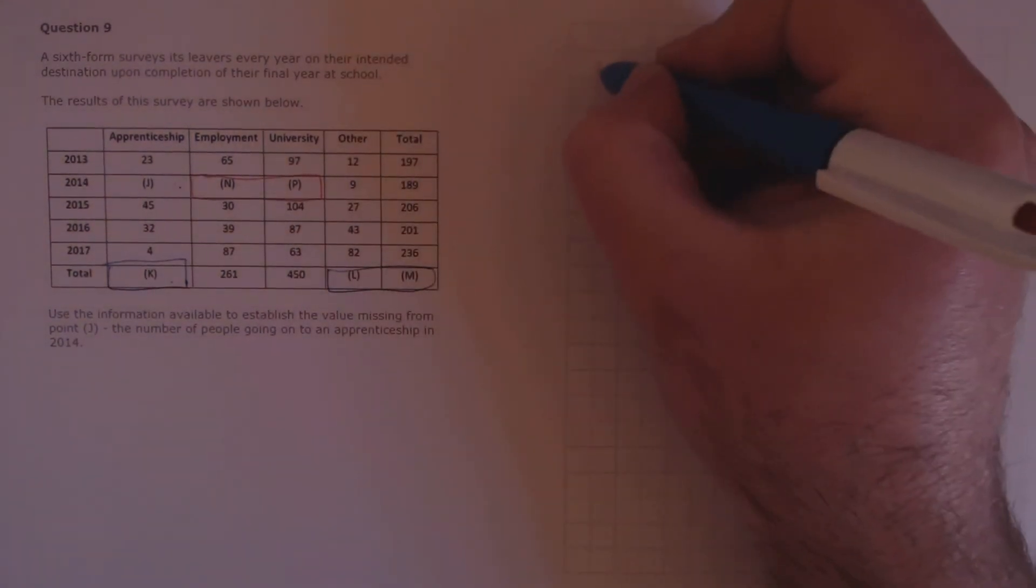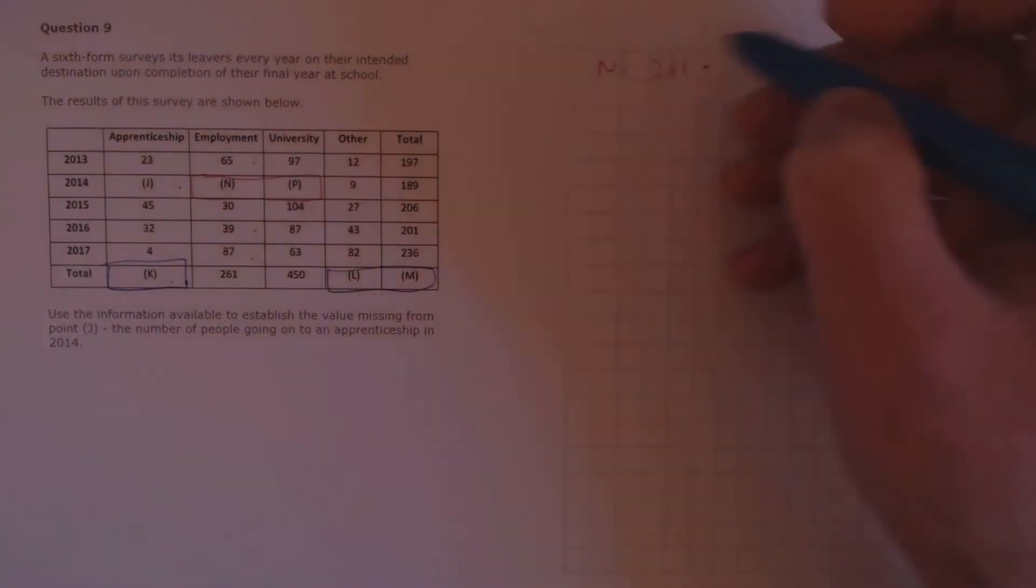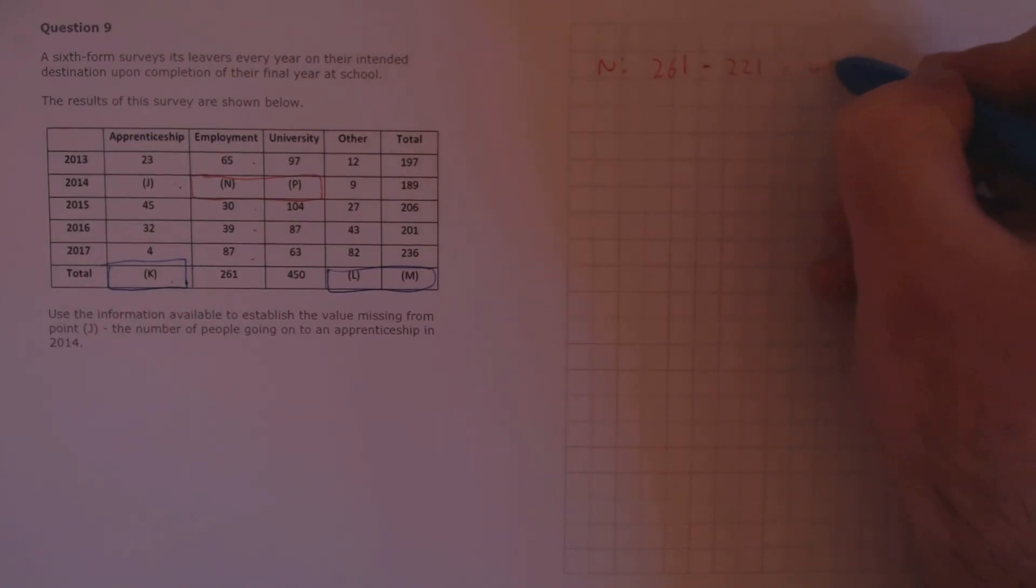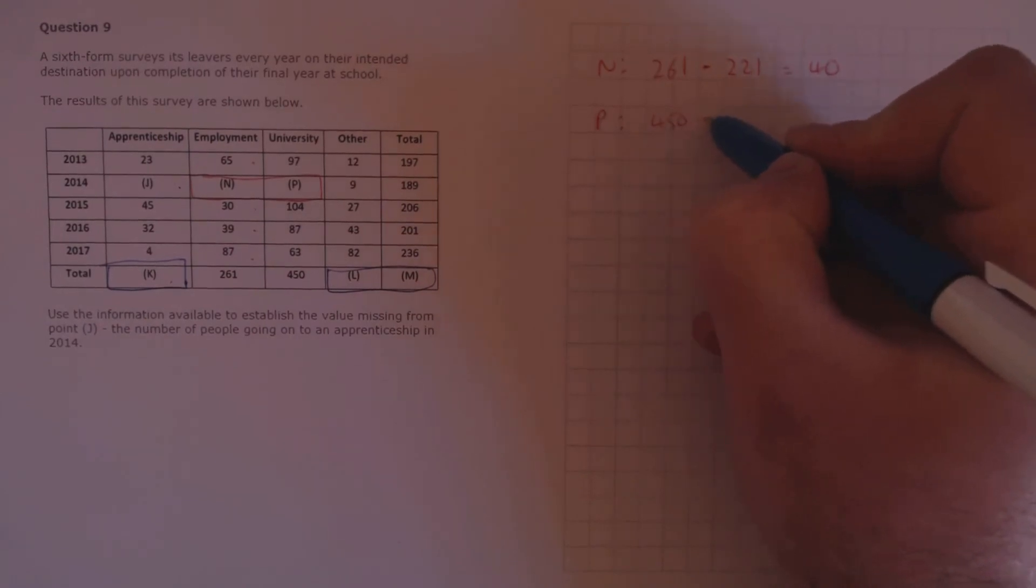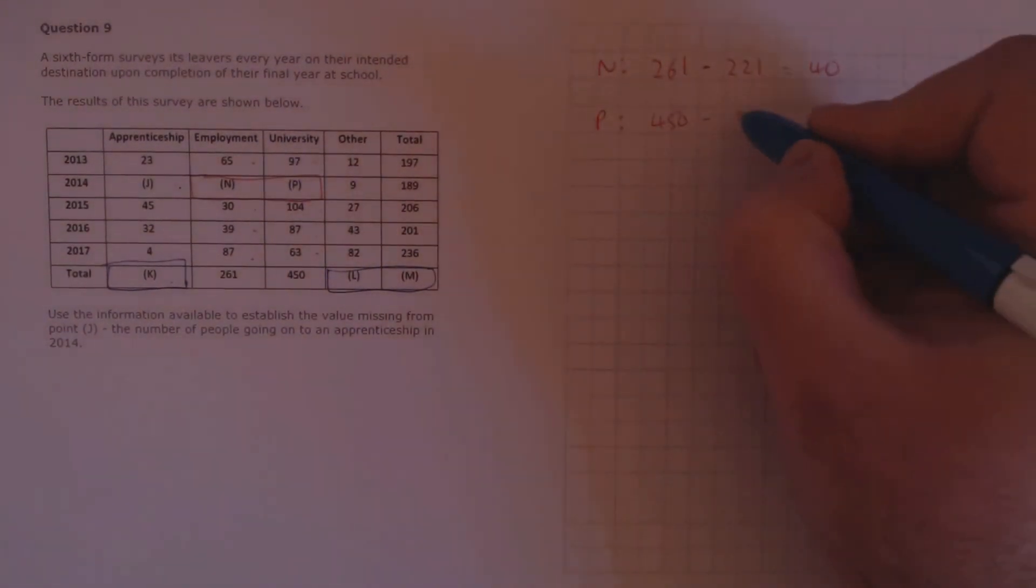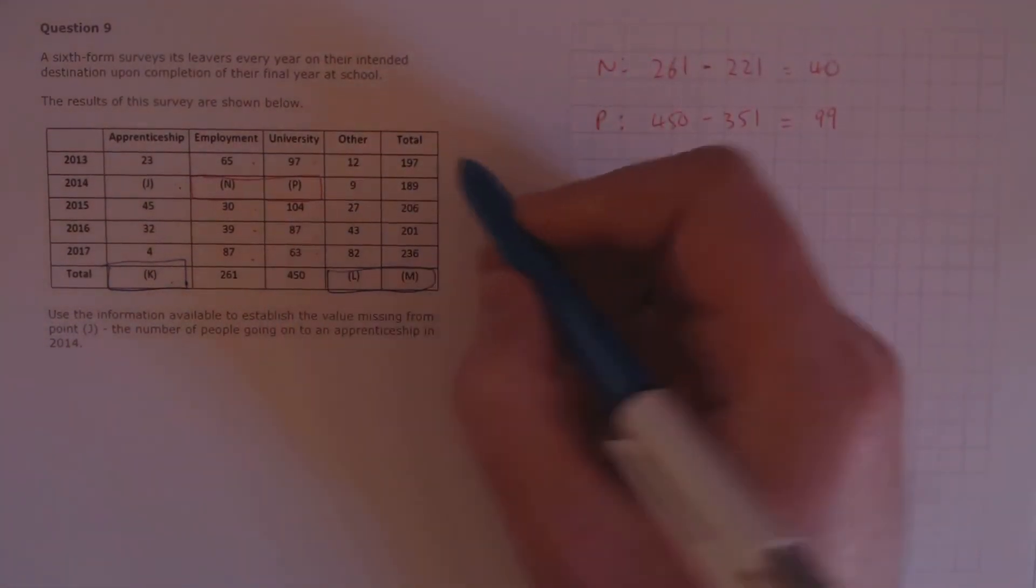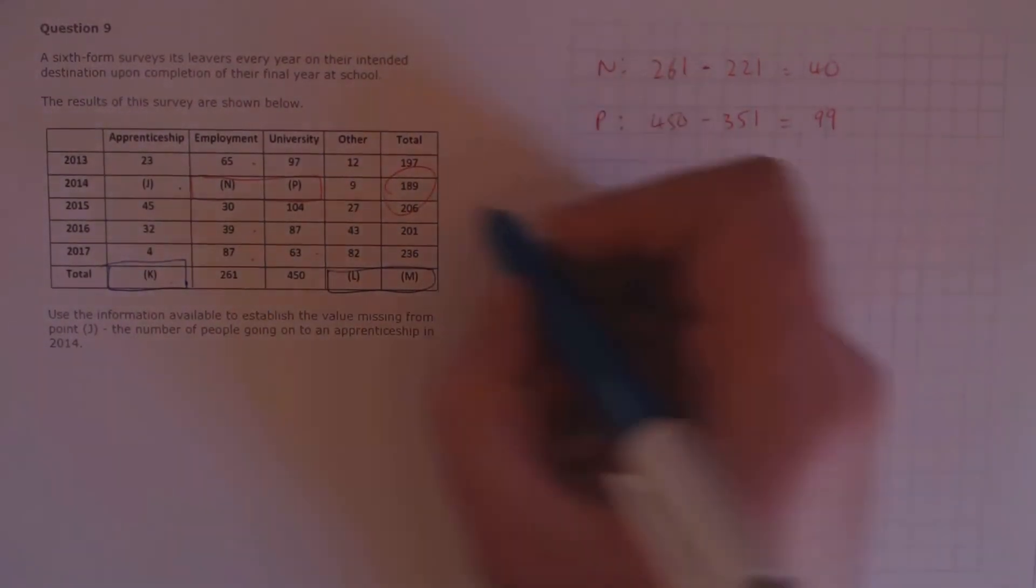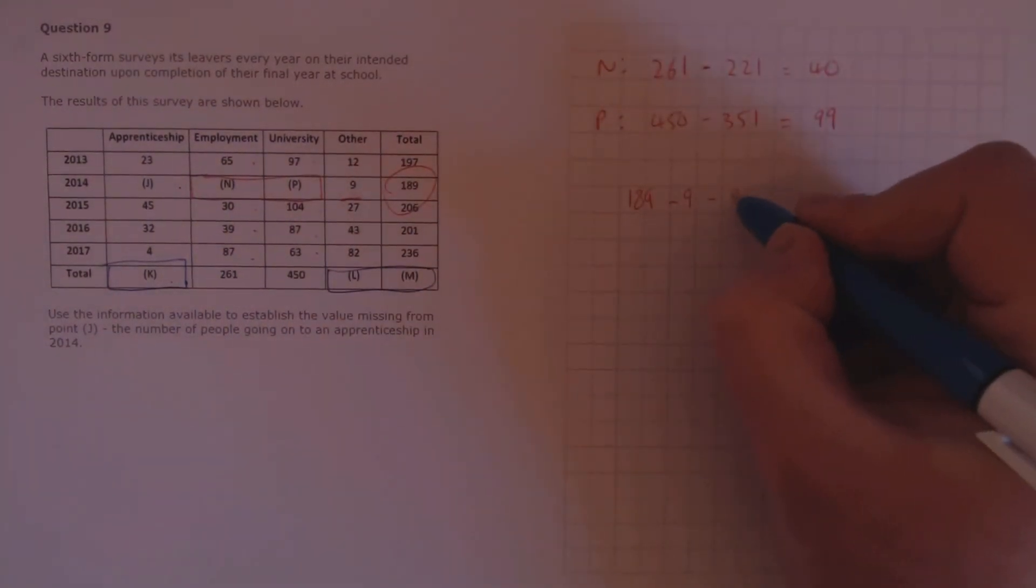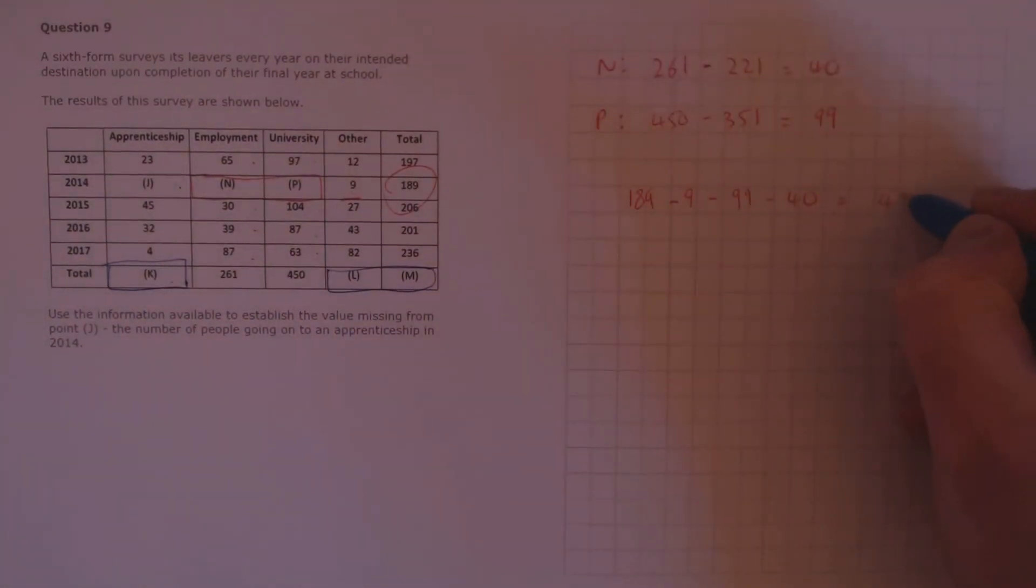So, first let's figure out N. We can do this by taking the total, 261, and summing up these four other numbers and taking that away. So that's 261 minus 221, which is 40. Similarly for P, we can take 450, add up these four, and take that away, that's 351, which gives us 99. Now that we've got N and P, we can take 189 here, take away 9 from there, take away P and N, 99 and 40, which should give us our value of J, which in this case is 41.